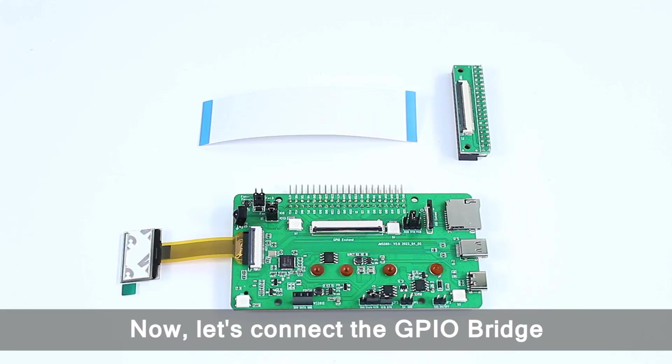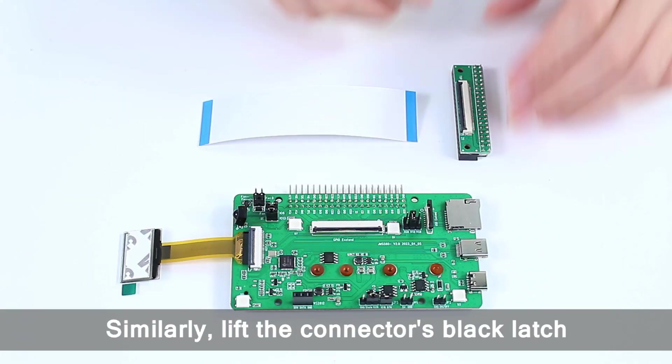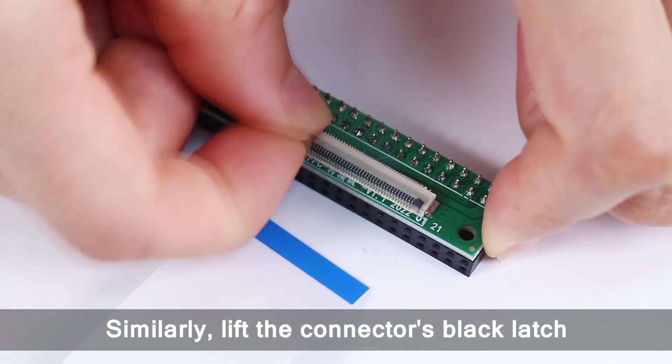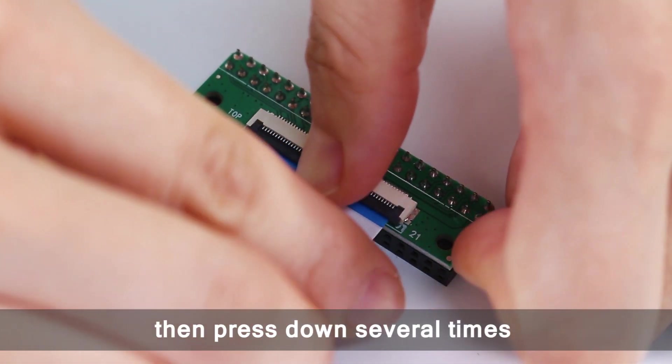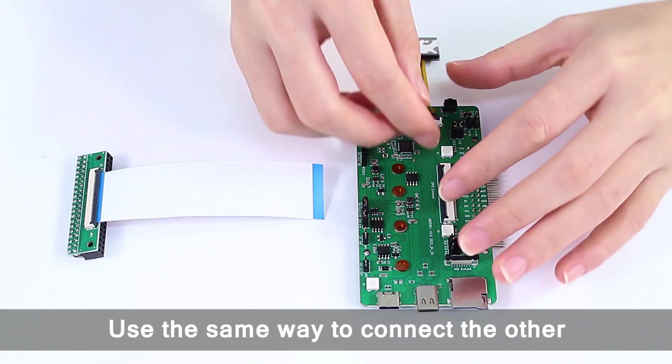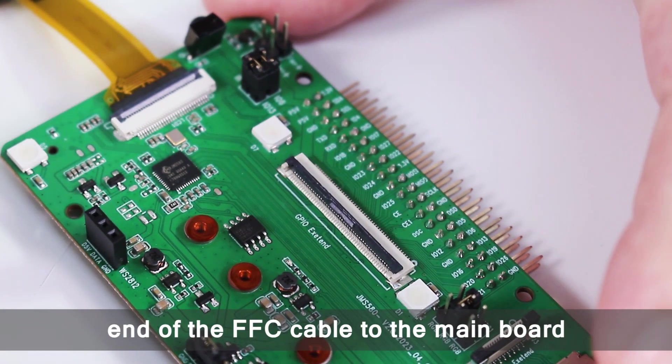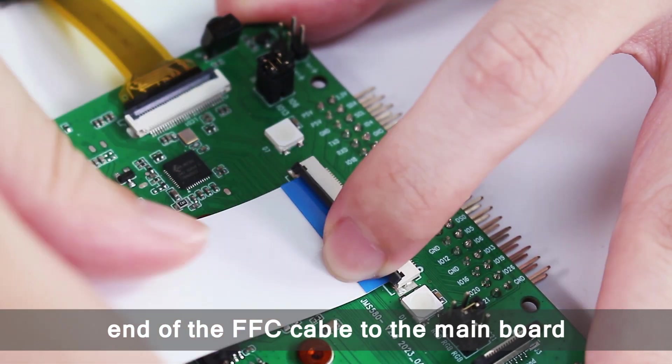Now, let's connect the GPIO bridge. Similarly, lift the connector's black latch, insert the FFC cable, then press down several times to ensure a solid connection. Use the same way to connect the other end of the FFC cable to the main board.